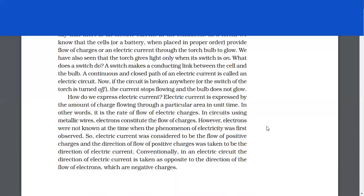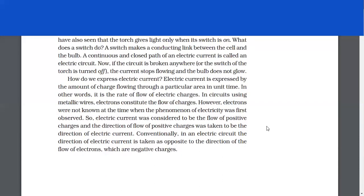Electric current is expressed by the amount of charge flowing through a particular area in unit time. In other words, it is the rate of flow of electric charges. In circuits using metallic wires, electrons constitute the flow of charges. However, electrons were not known at the time when the phenomenon of electricity was first observed. So electric current was considered to be the flow of positive charges, and the direction of flow of positive charges was taken to be the direction of electric current. Conventionally, in an electric circuit, the direction of electric current is taken as opposite to the direction of the flow of electrons, which are negative charges.